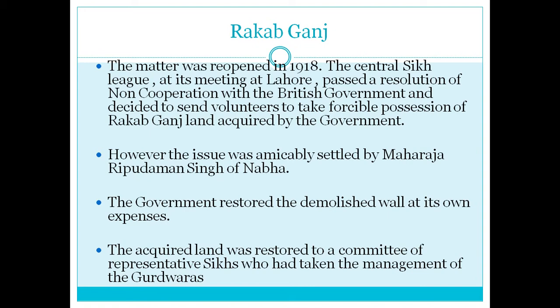The matter was reopened in 1918. The Central Sikh League, in its meeting at Lahore, passed a resolution of non-cooperation with the British government and decided to send volunteers to take possession of the Rakab Ganj land acquired by the government. The issue was amicably solved by Maharaja Ripudaman Singh of Nabha — the government restored the demolished wall at its own expense, and the acquired land was restored to a committee of representative Sikhs who had taken the management of the Gurdwaras.